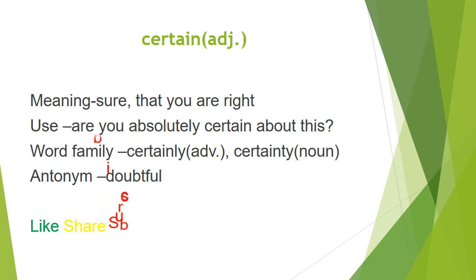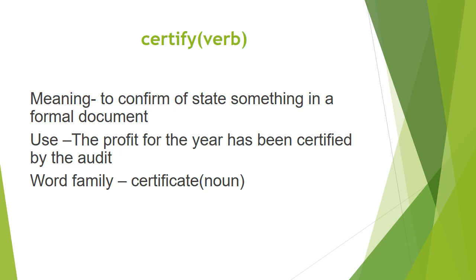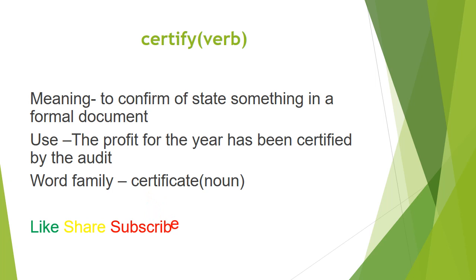Certain: adjective, meaning sure that you are right. Using sentence: are you absolutely certain about this? Word family: certainly adverb, certainty noun. Antonym: doubtful. Certify: verb, meaning to confirm or state something in a formal document — the profit for the year has been certified by the auditors. Word family: certificate noun.